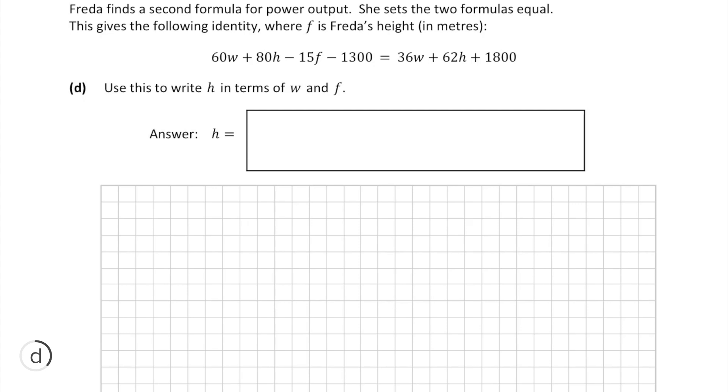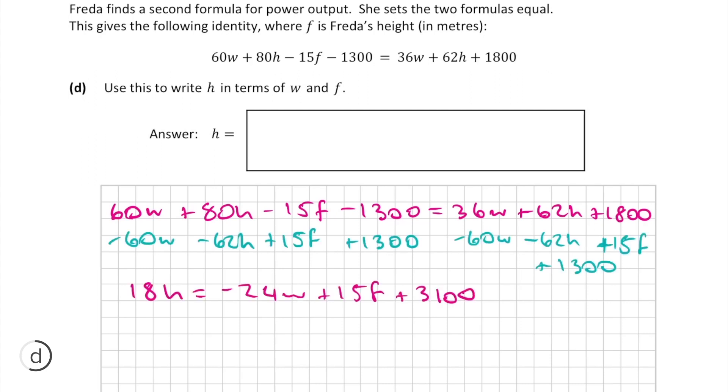So basically we just have to manipulate this equation to get h on its own. So what we're going to do is move all the h's to one side and move everything else to the other side. After doing so, we get this new equation. And the last step to get h on its own is to divide both sides by 18.